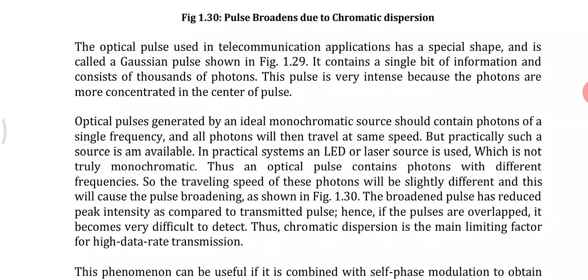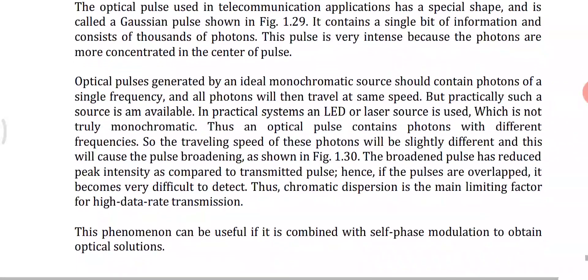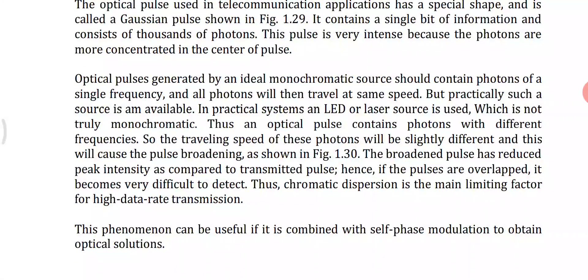An optical pulse generated by an ideal monochromatic source should contain photons of a single frequency, and all photons would then travel at the same speed. However, in practical systems, LED or laser sources used are not truly monochromatic. So the optical pulse contains photons with different frequencies, and the traveling speed is slightly different for each, causing pulse broadening.